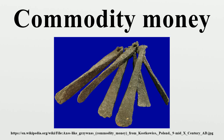Cigarettes and gasoline were used as a form of commodity money in some parts of Europe, including Germany, France, and Belgium, in the immediate aftermath of World War II. Cigarettes are still used as a form of commodity money in U.S. prisons.